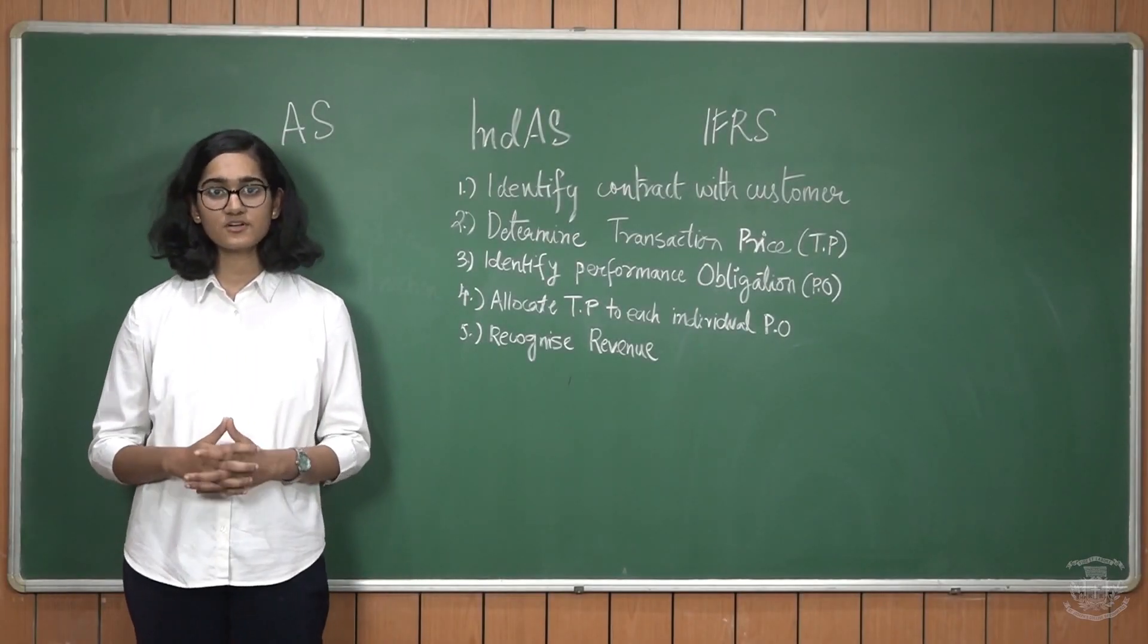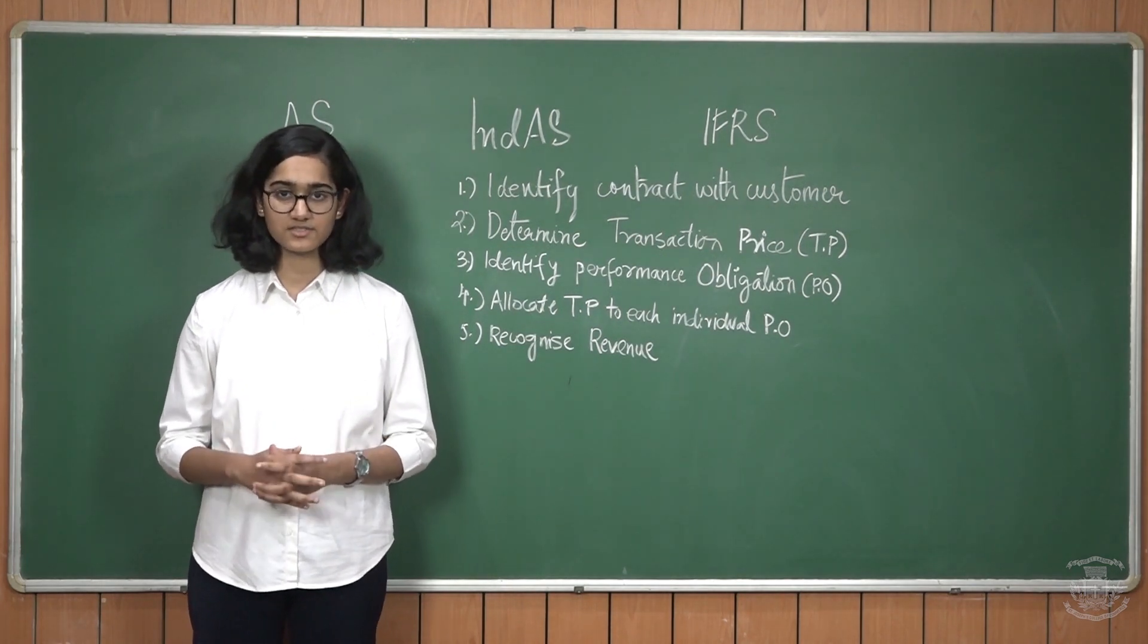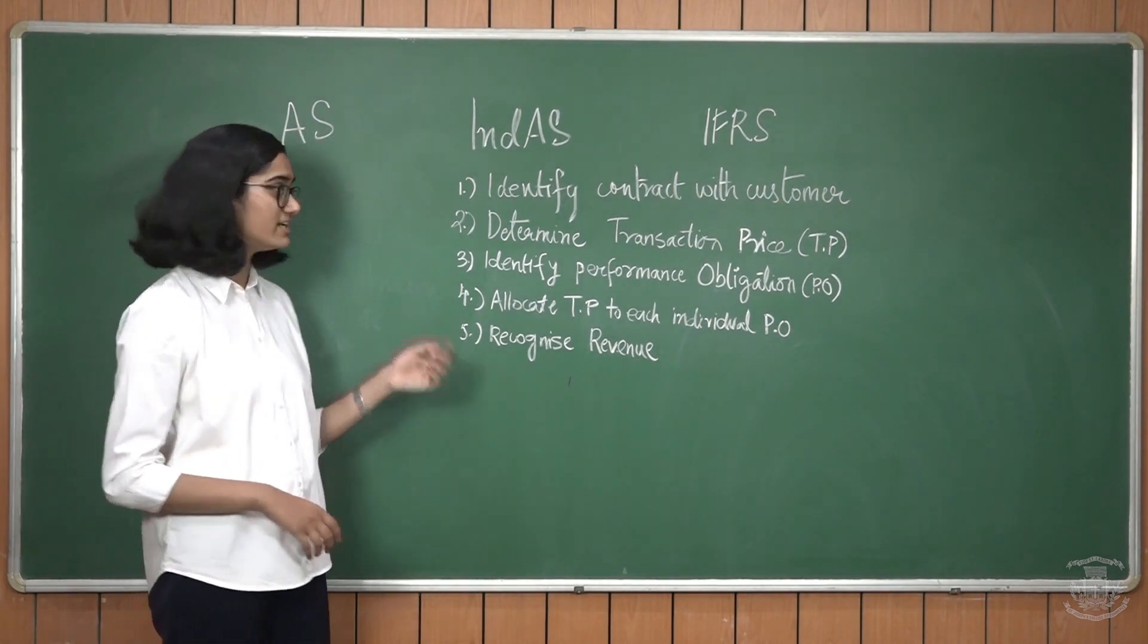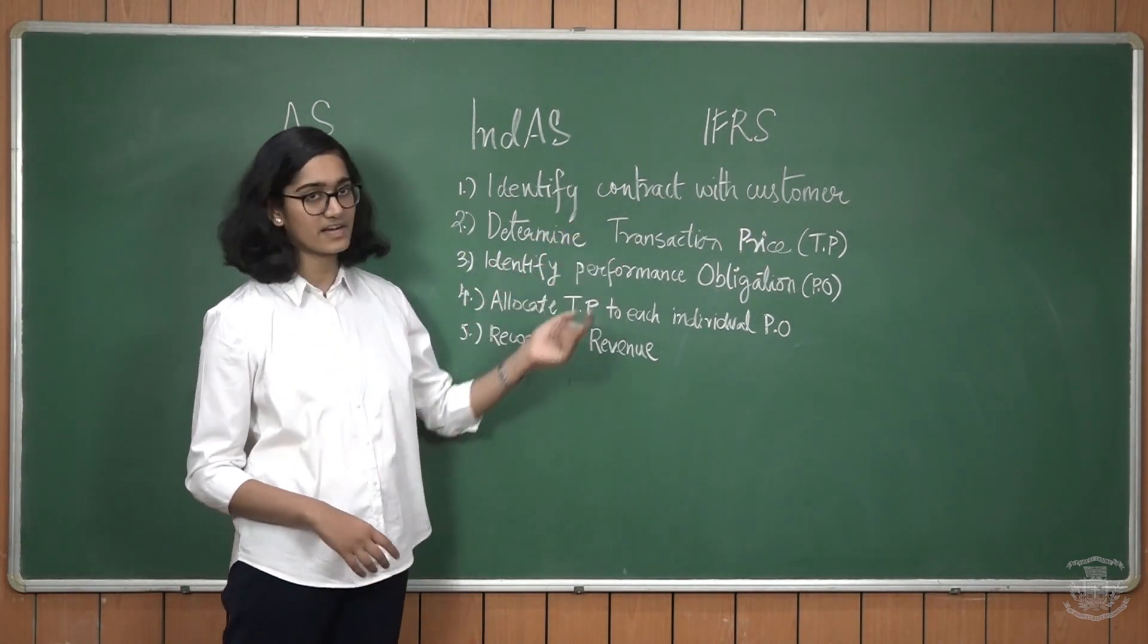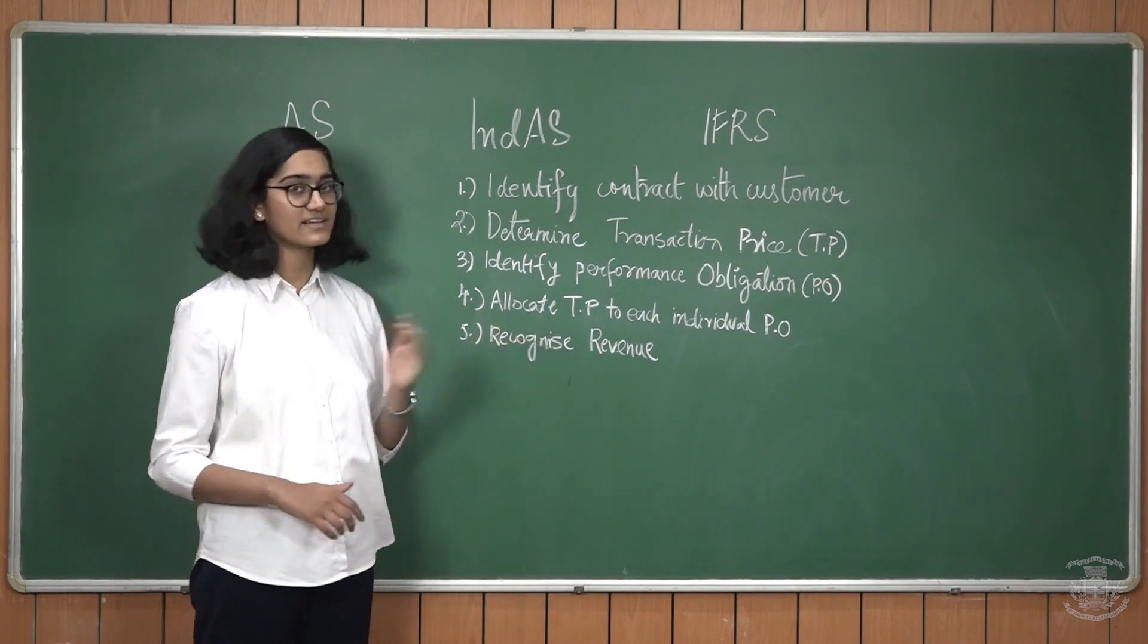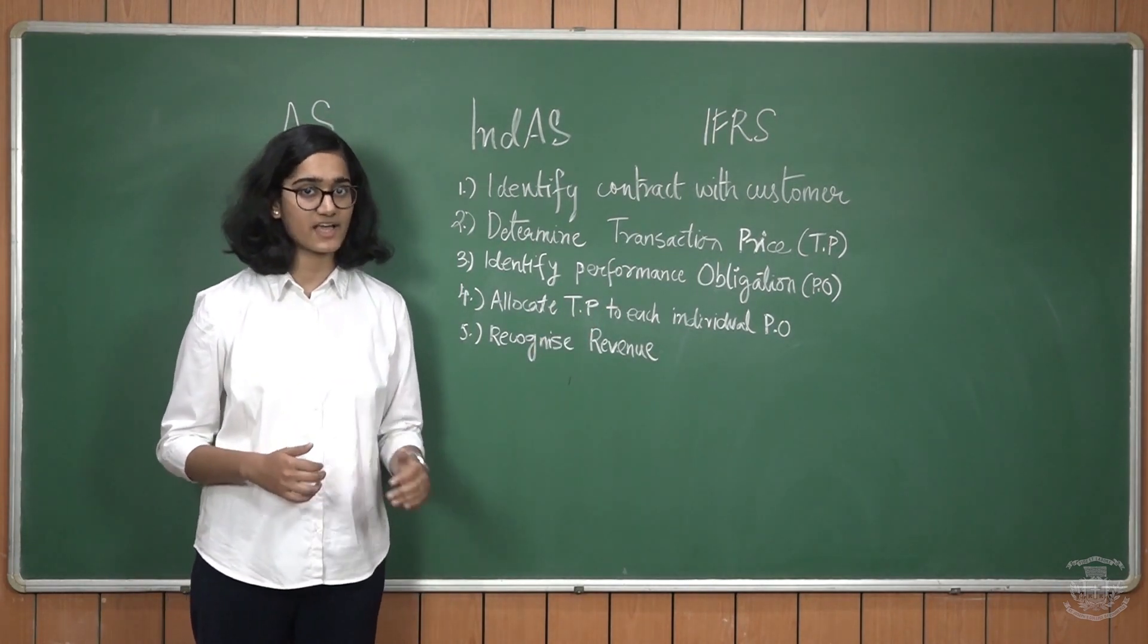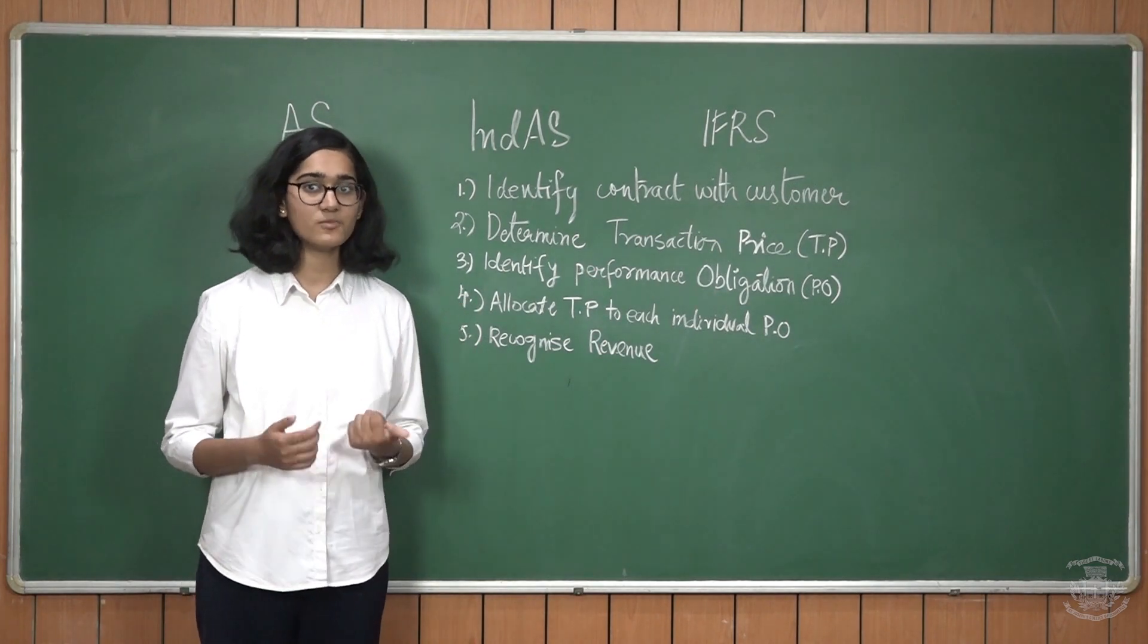An entity enters into a contract with a customer to deliver a machine as well as provide installation services for $500. How do we recognize revenue? As per the five-step model, we need to go through each of the five steps. First step says that we need to identify if the contract is with the customer. This question clearly states that the contract is with a customer. Step number two says, determine the transaction price. In our question, the transaction price is $500.